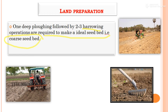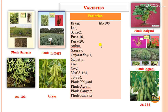The varieties of soybean include Bragg, Lee, Soybean 2, Pusa 16, Pusa 20, Ankur, Gauros, Gujarat Soy 1, Moneta, CO1, CO2, MSCS 124, JS 335, Phule Kaldeni, Phule Agrani, Phule Sangam, Phule Kimaya, and KS 103. You can see photographs here — Phule Kaldeni, Phule Agrani, JAIS, which is a popular variety grown all over India, along with Ankur, KS 103, Phule Sangam, and Phule Kimaya.